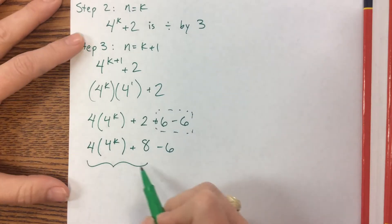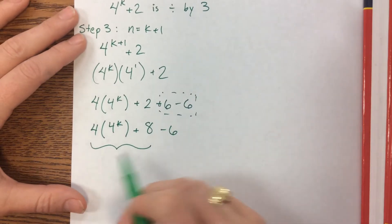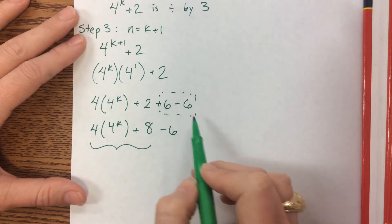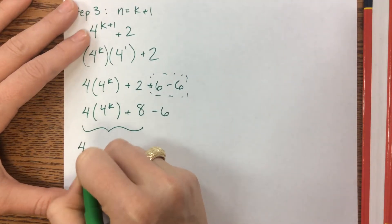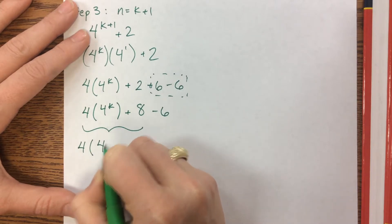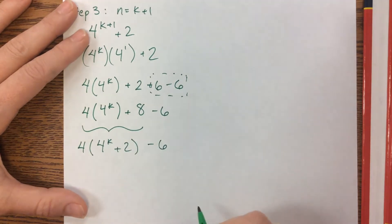The actual proof, the write up, a lot of these the way that you write it up matters a lot. You can use brackets just to help show you what's going on. I wouldn't include the brackets in the final proof. I can factor out a 4 and I'm left with 4 to the k plus 2 minus 6.